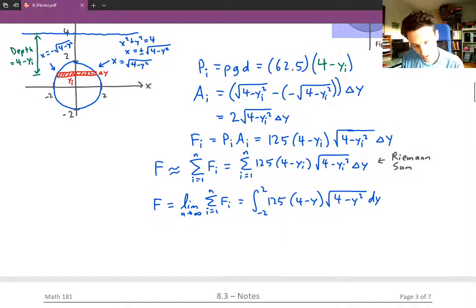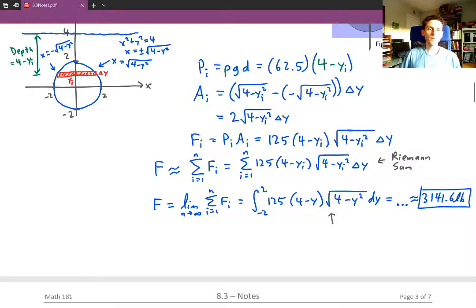Now if you evaluate this integral, you'll end up getting something like 3,141.6 pounds. And I'll just say a couple of words about how you evaluate this integral. We're not going to do the whole thing here. But what you would do is, one way of doing it is you could take the square root of 4 minus y squared, distribute it to the 4, distribute it to the y.